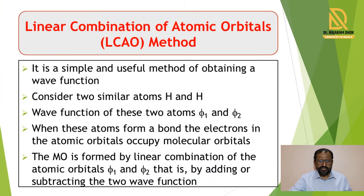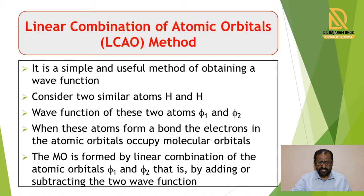In the Linear Combination of Atomic Orbitals, we see different points. The LCAO is a simple and useful method for obtaining the wave functions of molecular orbitals. As a simple example, consider hydrogen molecule formation using two hydrogen atoms H and H. We consider two similar hydrogen atoms, and the wave functions of these two hydrogen atoms are denoted by the symbols phi1 and phi2.